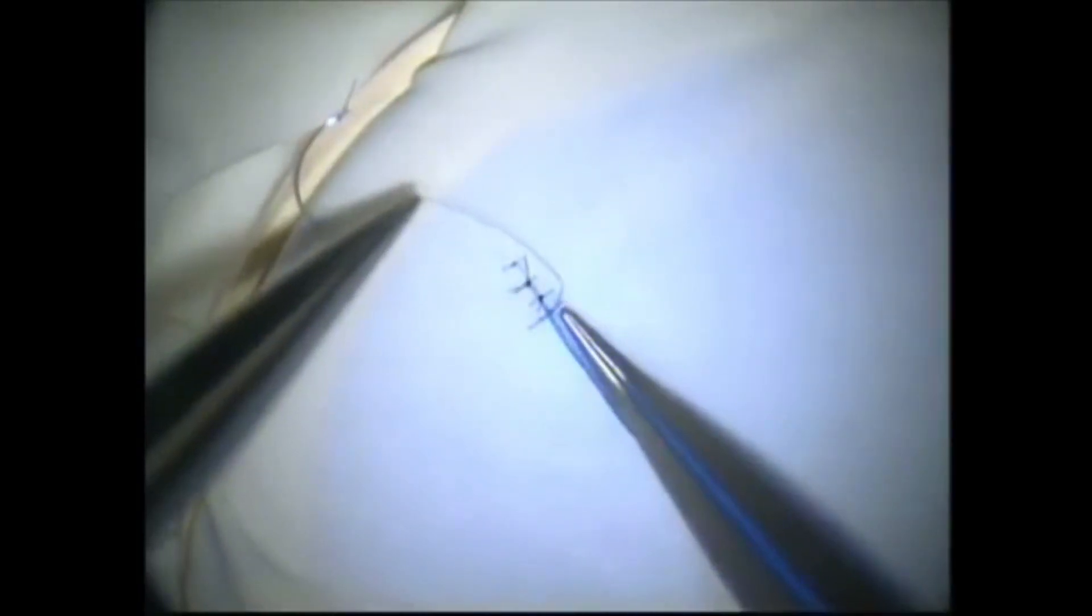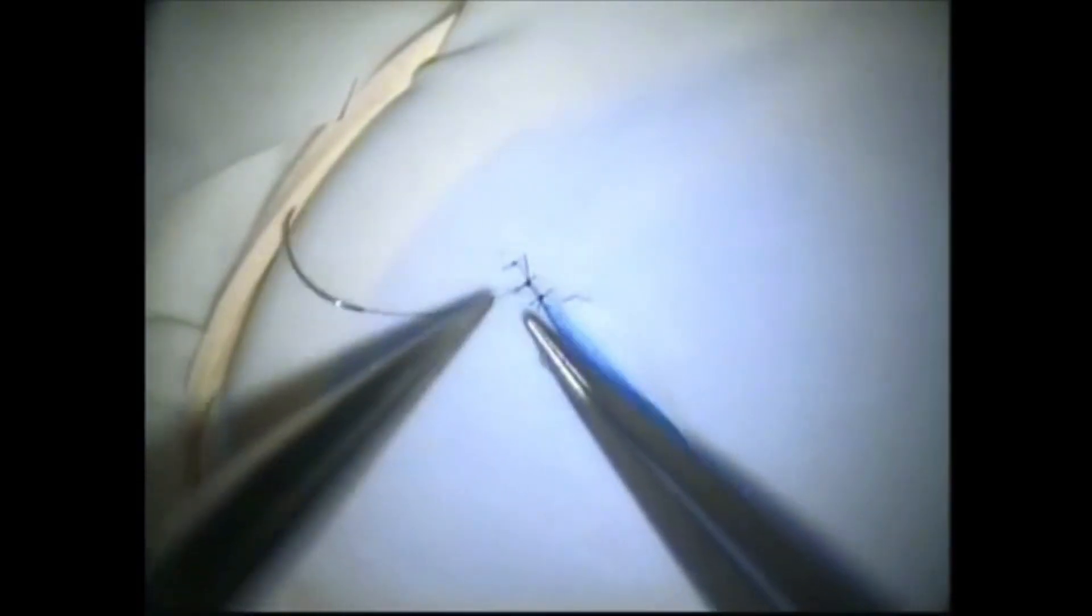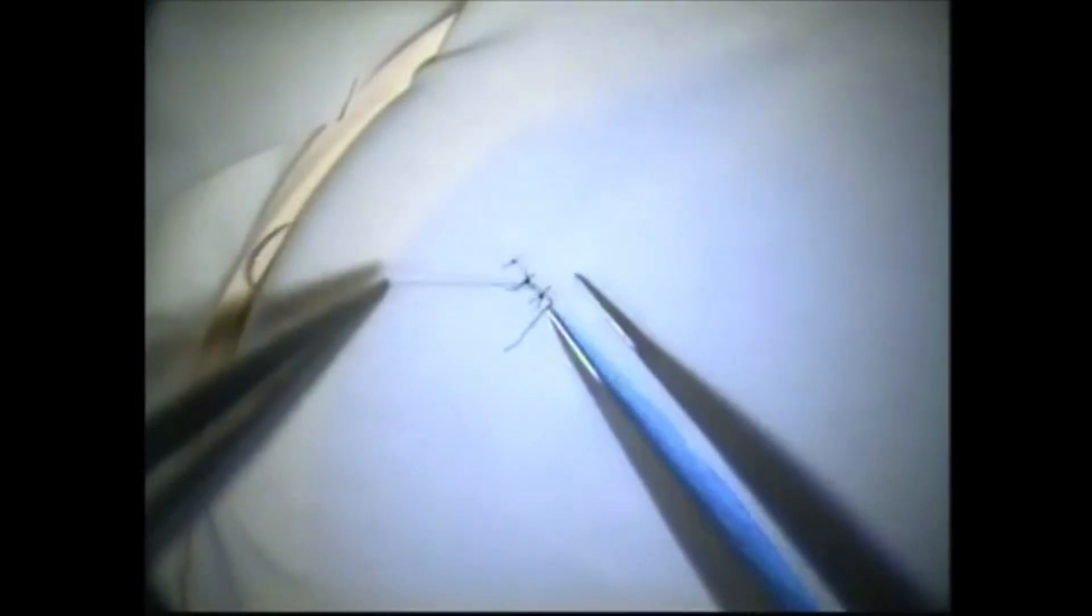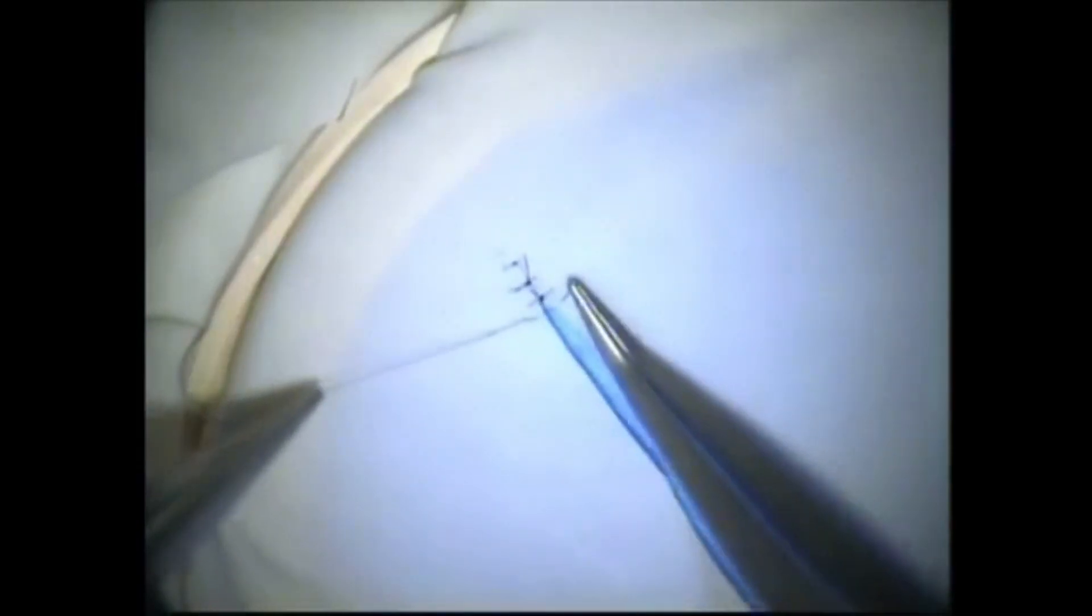If there's a tendency for the edges to spring apart, we can do one of two things. Either we can make a surgeon's knot on the first one and grab that and lay it down that way, which will snug it down quite nicely, or there's another technique that can be used to lay the knot down and keep it from separating the wound edges.